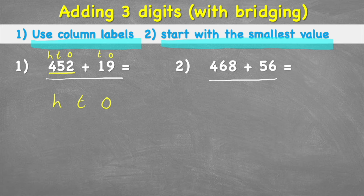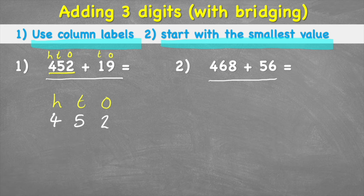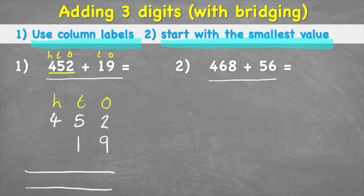Looking at 452, I have a two in the ones, five in the tens, four in the hundreds. Rather than making the mistake of putting the one and nine in the wrong places, I can see my nine is in the ones column and my one is in the tens column. If that was tricky, go back and watch that part again — this is really important for column addition.